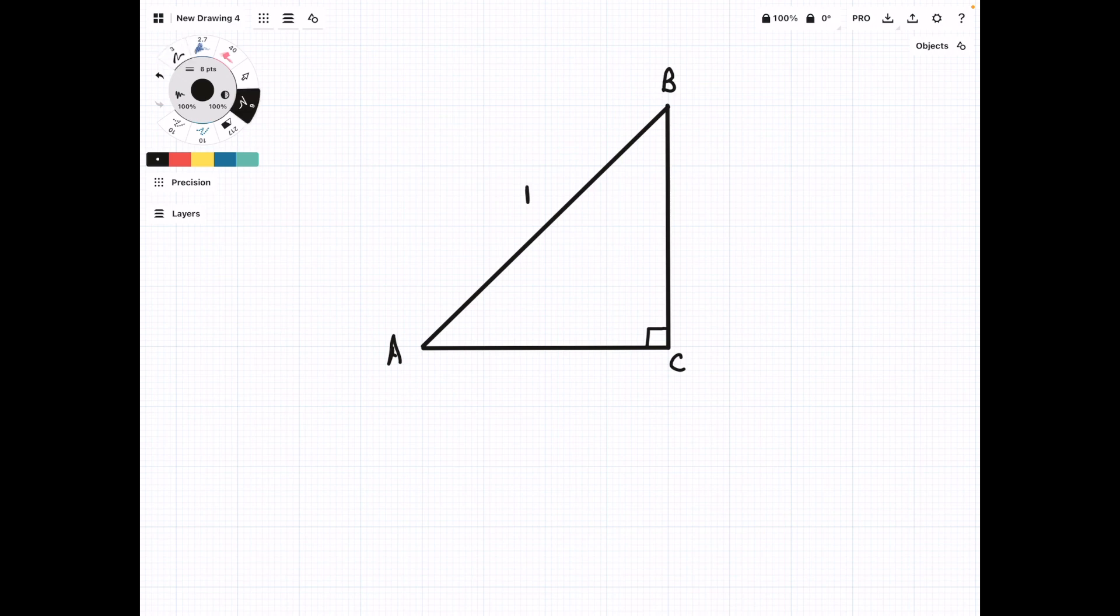So you can imagine this is sitting on the unit circle. Then, we're going to extend the line from angle A that divides it into two smaller angles, which we're going to label as X and Y.